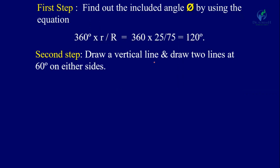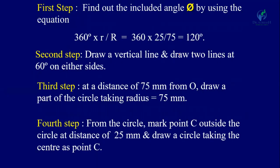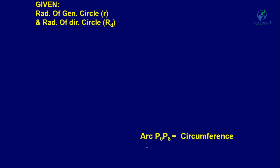The steps are: First, find the included angle phi — which is 120 degrees. Second, draw a vertical line and draw two lines at 60 degrees on either side, giving a total angle of 120 degrees. Third, at a distance of 75 mm from O, draw an arc of the directing circle with radius 75 mm. Fourth, from the directing circle, mark center C at a distance of 25 mm outside and draw the rolling circle of radius 25 mm.